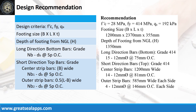Design recommendations: fc' equals 28 MPa, fy equals 414 MPa, qa equals 192 kPa. Footing size is 1,200 mm x 2,370 mm x 355 mm, with depth from natural grade line of 1,350 mm. Long direction bars grade 414: 15 pieces, 12 mm bar at 75 mm on center. Short direction bars grade 414 — center strip bars, 1,200 mm wide: 14 pieces, 12 mm bar at 81 mm on center. Outer strip bars, 585 mm wide each side: 4 pieces, 12 mm bar at 146 mm on center each side.